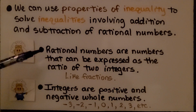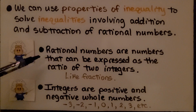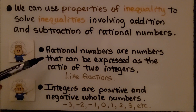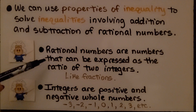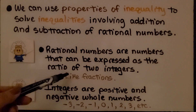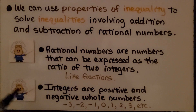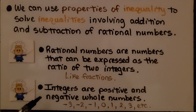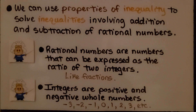Remember, rational numbers are numbers that can be expressed as the ratio of two integers, like fractions. Integers are positive and negative whole numbers, and that includes zero.